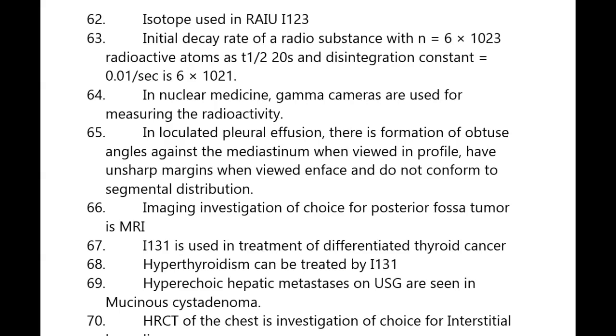Initial decay rate of a radioactive substance with N = 6 × 10²³ radioactive atoms, a half-life of 20 seconds, and a disintegration constant of 0.01 per second is 6 × 10²¹. In nuclear medicine, gamma cameras are used for measuring radioactivity.